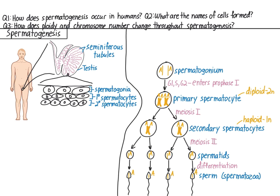The entire process, from spermatogonium to fully mature sperm, takes about 50 days. It starts at puberty and continues throughout the male's life, producing millions of sperm every single day.